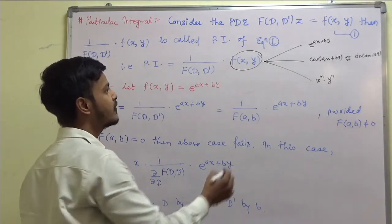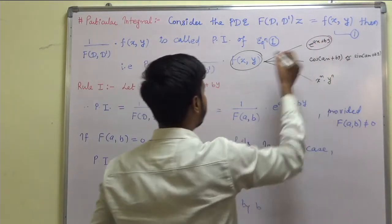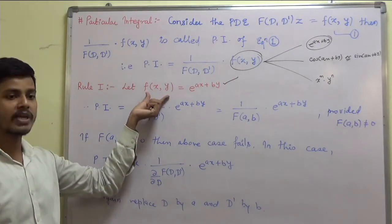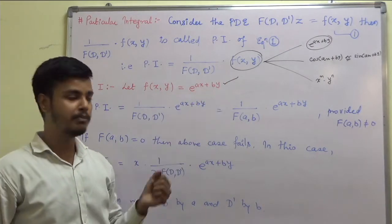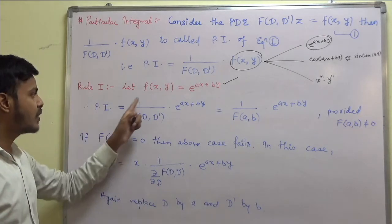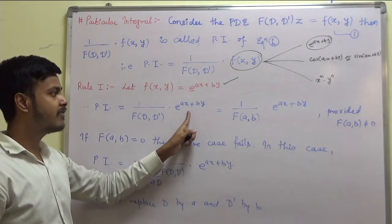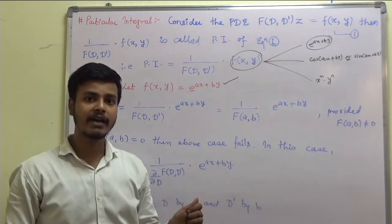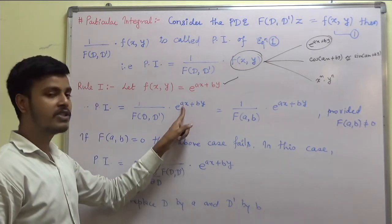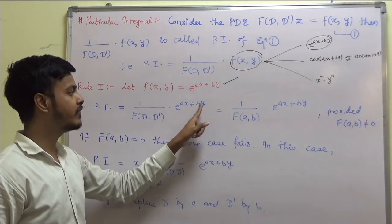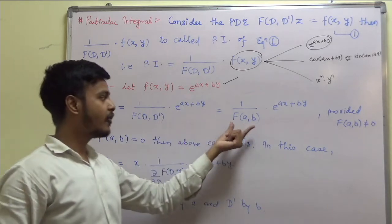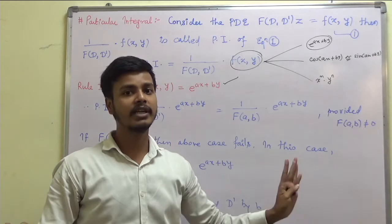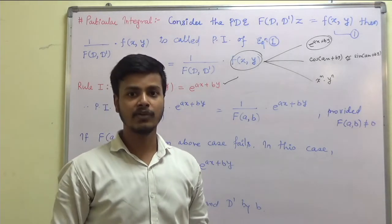In this learning video we are going to concentrate on the first case: what happens when f(x, y) = e^(ax + by). Then PI = 1/f(D, D') applied to e^(ax+by). What you do is put D equal to the coefficient of x and D' equal to the coefficient of y. If f(a, b) is not equal to 0, you will get the particular integral.